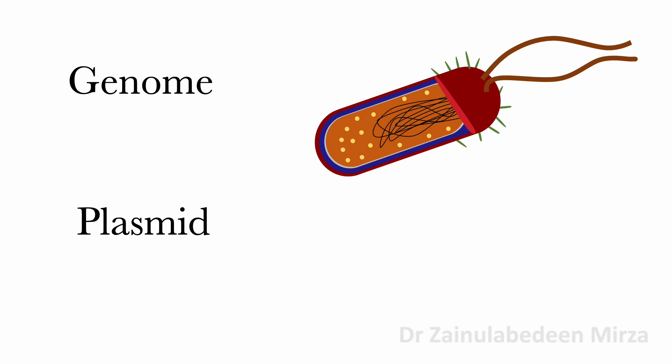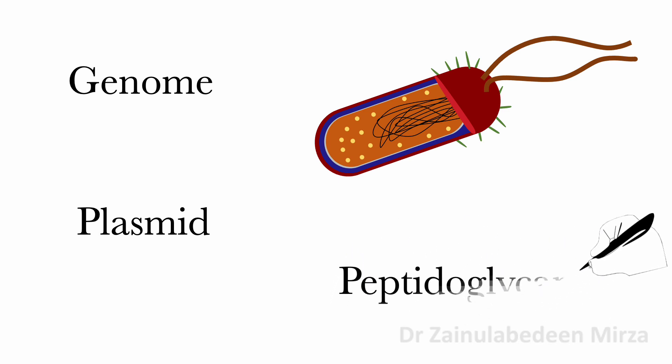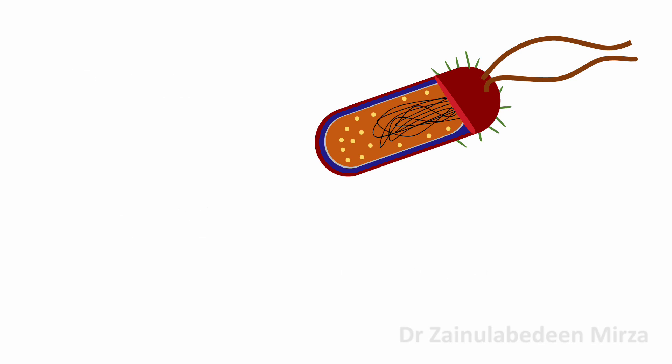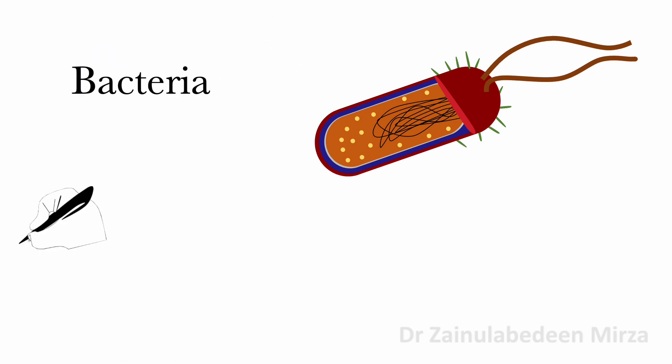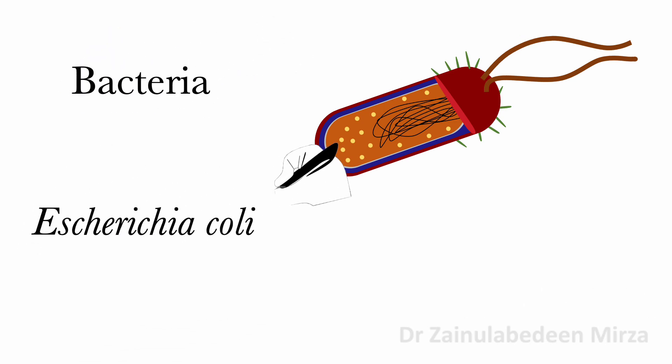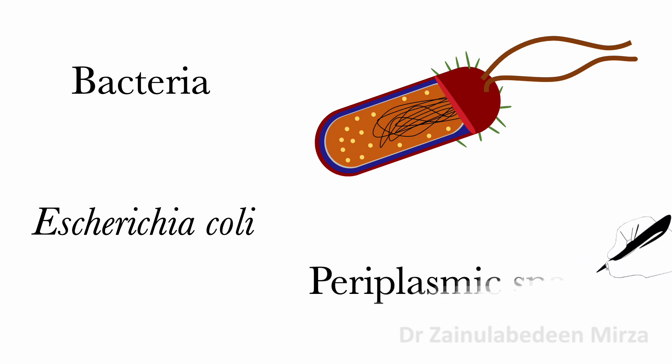Bacteria possess a cell wall close to the plasma membrane on the internal side. The cell wall has a layer of peptidoglycan, a complex of protein and oligosaccharide. This complex helps protect the cell and maintain its shape. Some bacteria, like E. coli, have a periplasmic space that separates the thin layer and outer membrane.